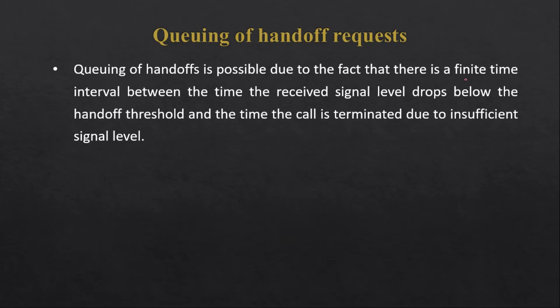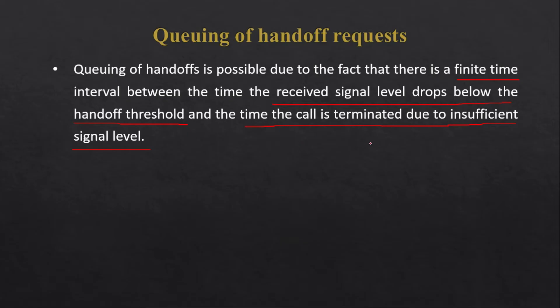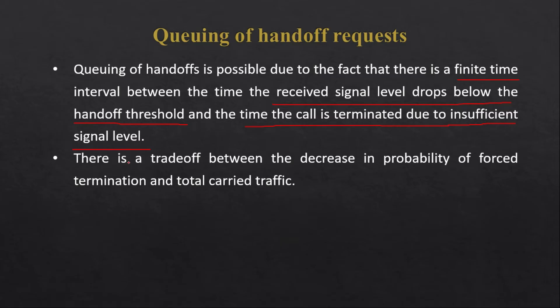Another prioritizing handoff method is queuing of handoff requests. Queuing is possible due to the fact that there is a finite time interval between the time the received signal level drops below the handoff threshold and the time the call is terminated due to insufficient signal level. When a user is moving from one cell to another, there is some finite interval of time where the user's signal strength reduces below the minimum acceptable level. We take advantage of this time interval by putting the user into a queue.